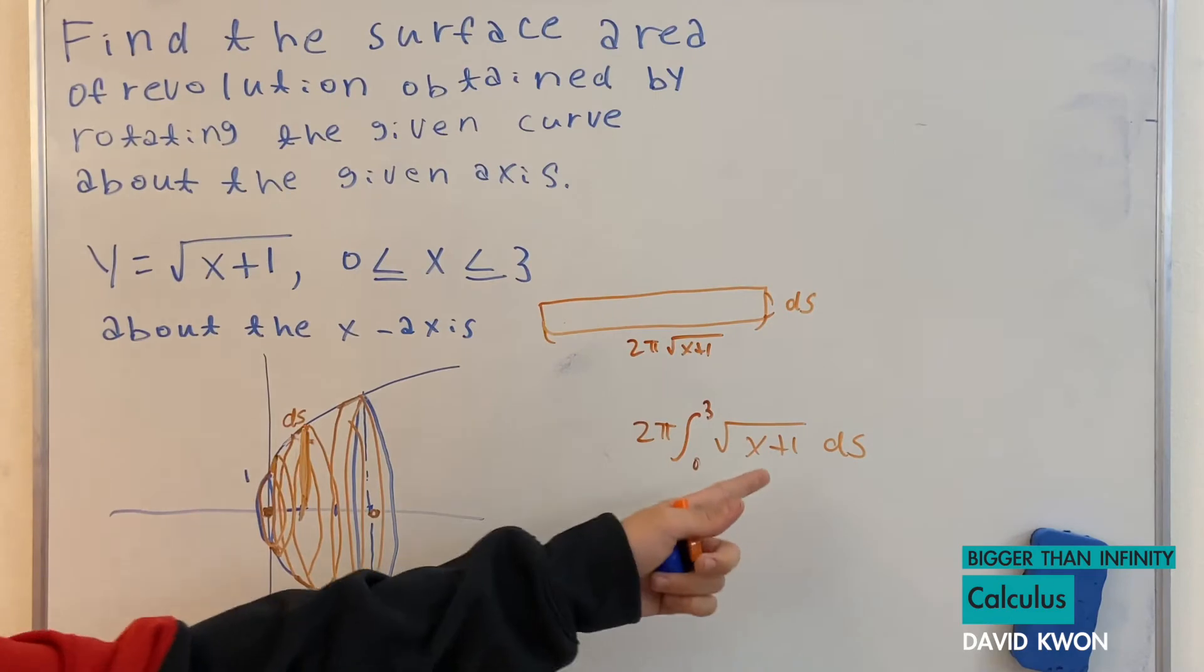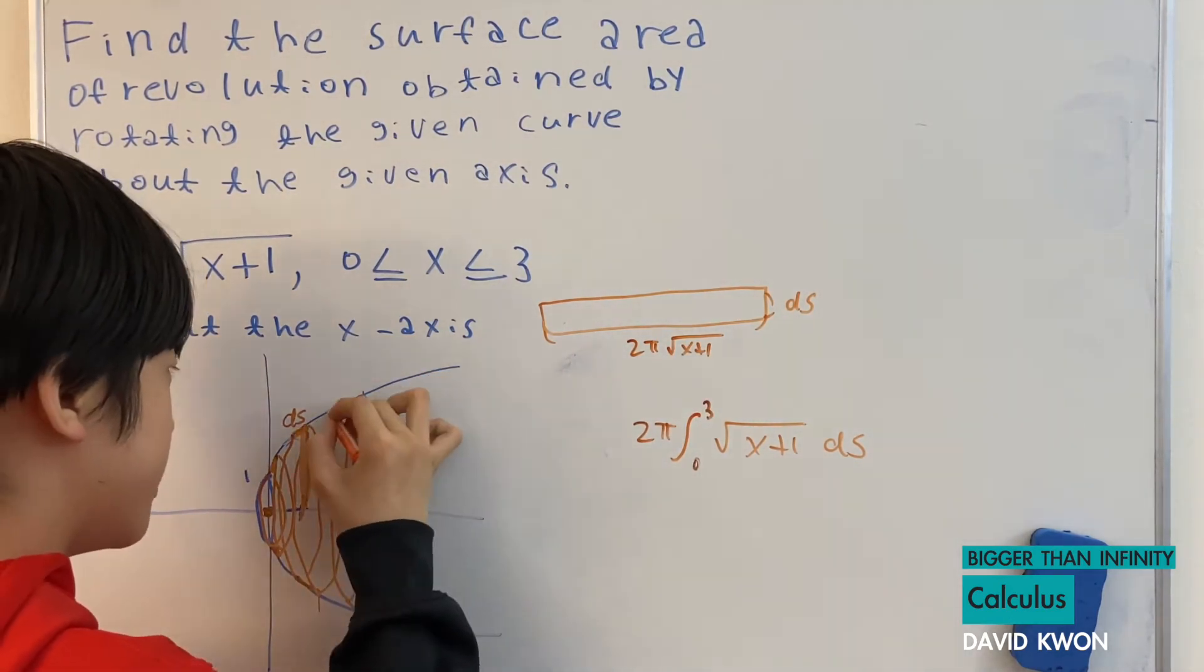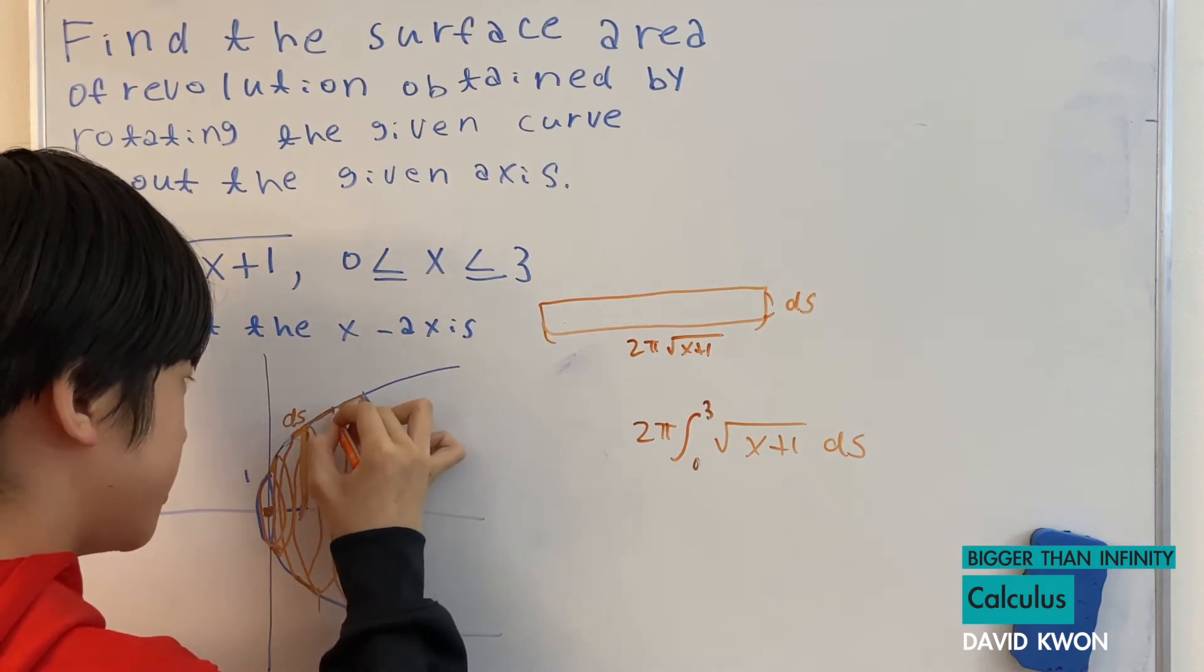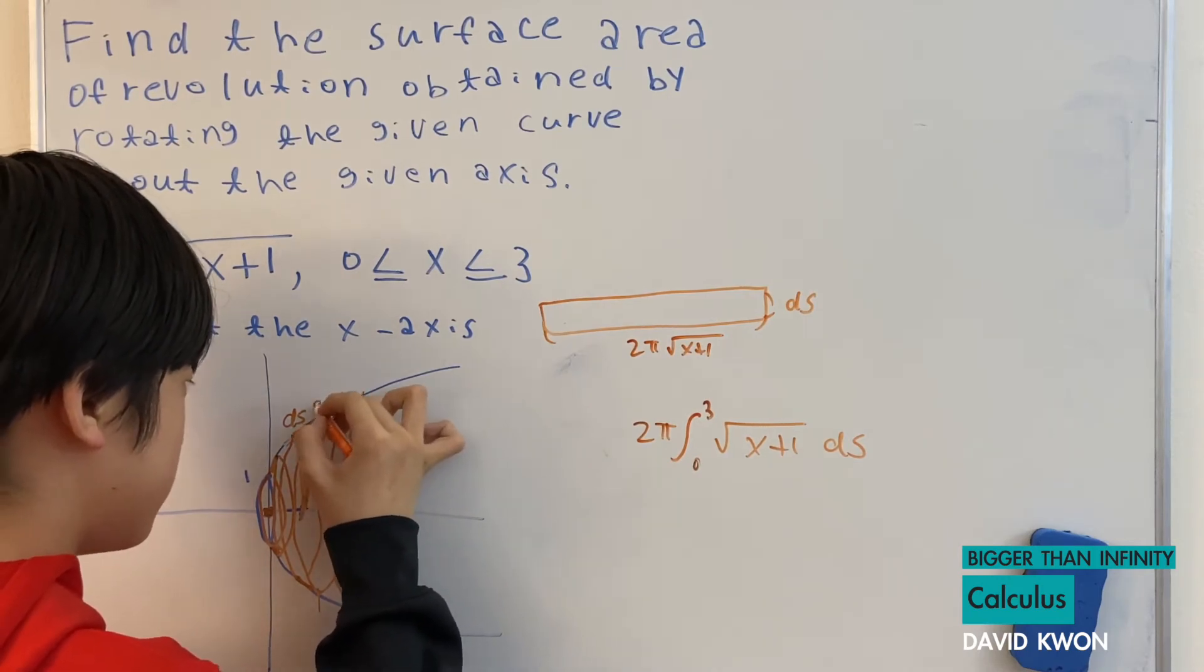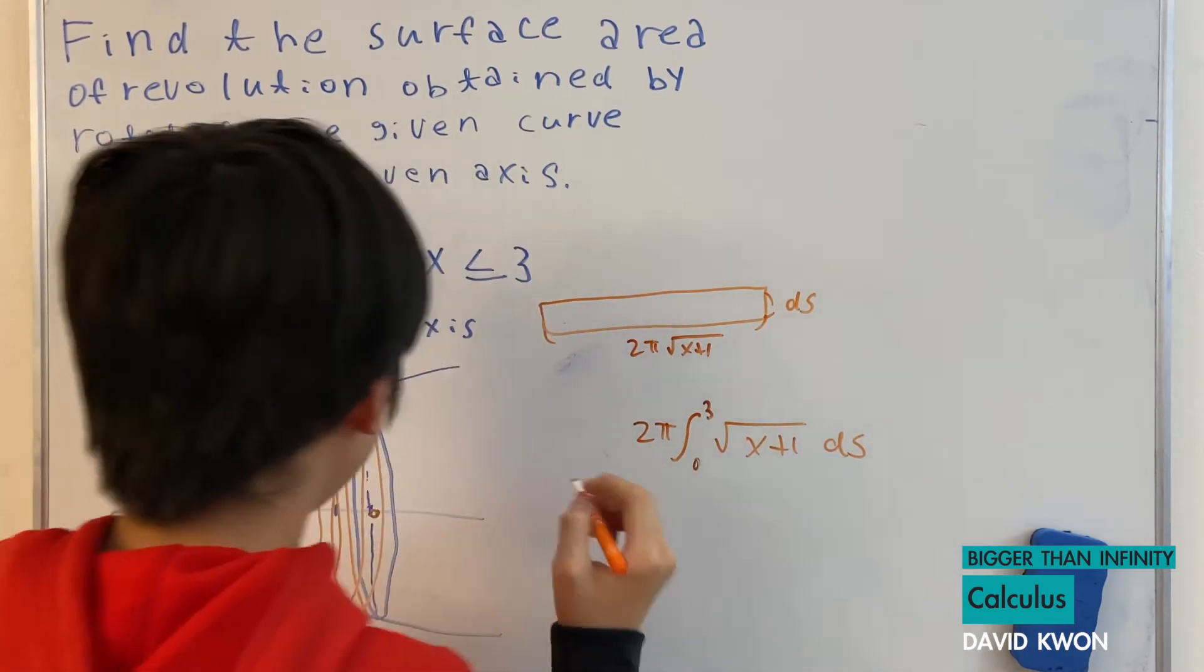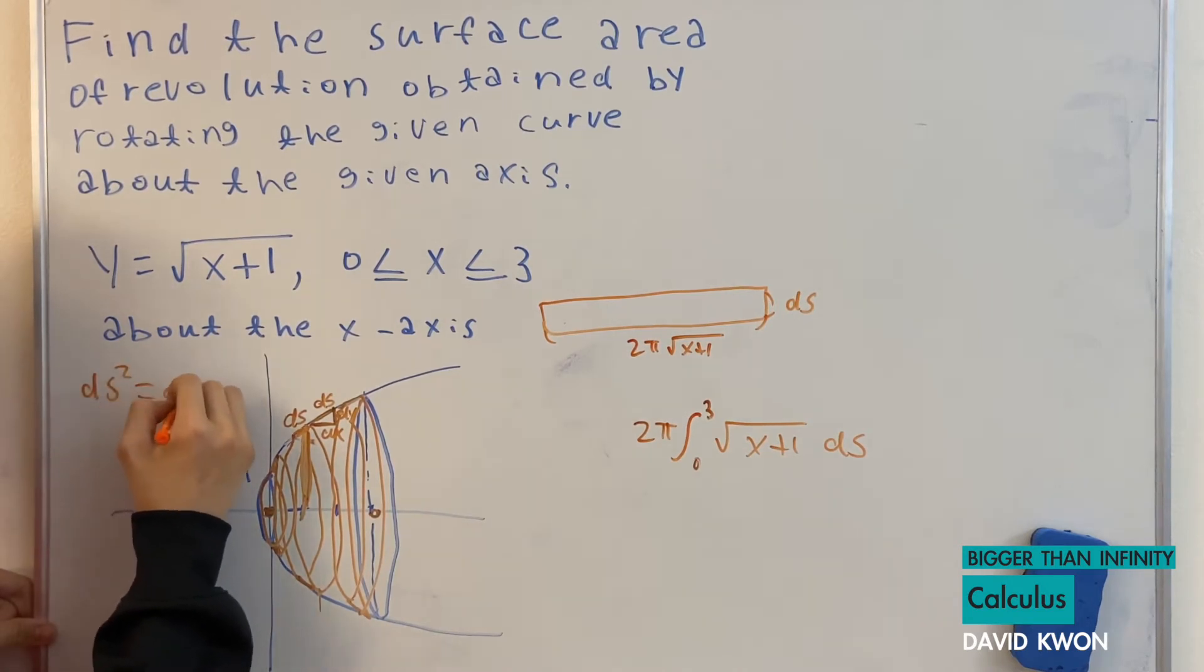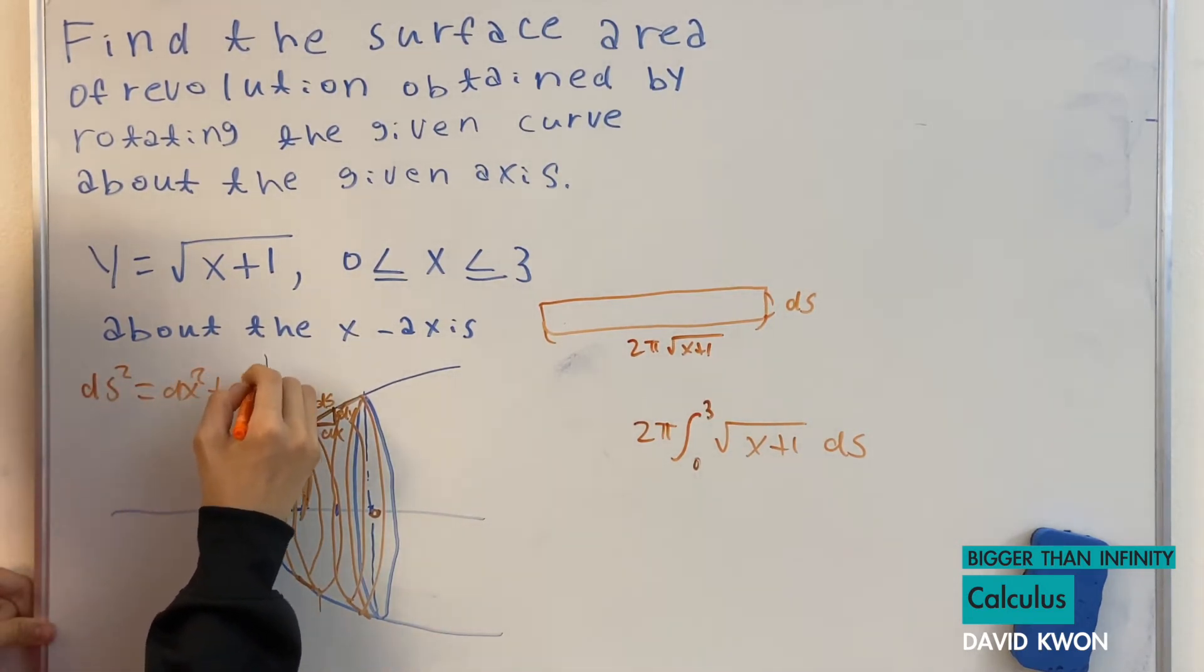The way we find the value of ds is, if we call this ds, which means this is going to be dy and this is dx. So ds dy dx. Which also means that ds squared is equal to dx squared plus dy squared.